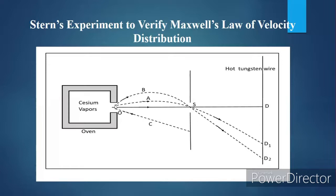In the presence of gravitational field, which is the actual condition on the Earth's surface where we conduct the experiment, the cesium atoms emitted from the oven will trace a parabolic path — just like a projectile. Due to the gravitational force, molecules having higher velocity will trace different parabolic curves.